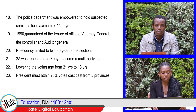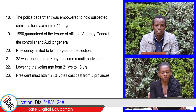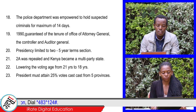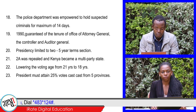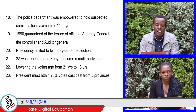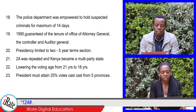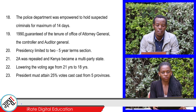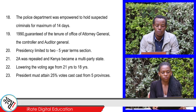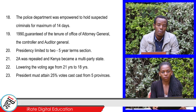20. The presidency was limited to two five-year terms. 21. Section 2A was repealed and Kenya became a multi-party state. 22. The voting age was lowered from 21 years to 18 years. 23. The President must attain 25% of votes cast from five provinces.